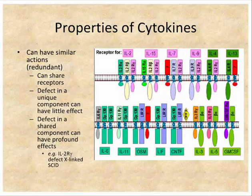The redundancy is there for a purpose. On the other hand, if you knock out the IL-2 receptor gamma gene, you essentially wipe out the activity of all those cytokines — a very serious defect. In fact, that's one of the severe combined immunodeficiencies: a defect in the IL-2 gamma part of the receptor. Because both B cells and T cells use these receptors, knocking out that common subunit becomes a serious defect.